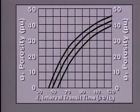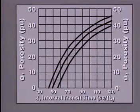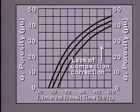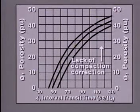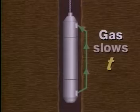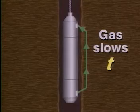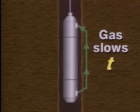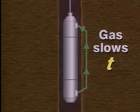In unconsolidated sands, the sonic log will read more than the true porosity. Thus, a special chart must be used that contains compaction corrections. Gas in the formation will also tend to slow the sonic waves, resulting in the log reading more than the true porosity.